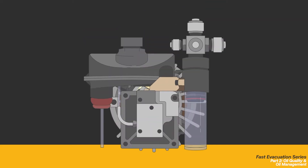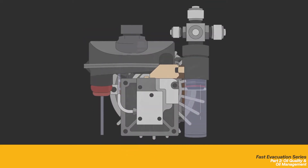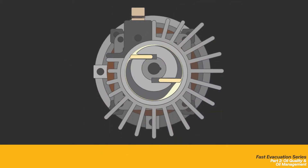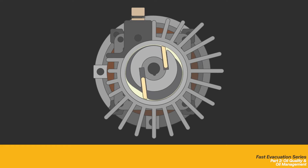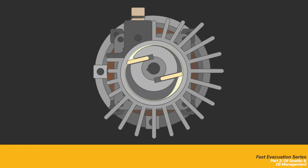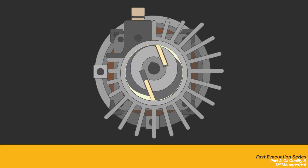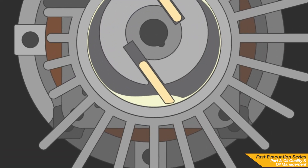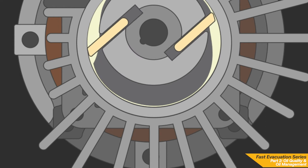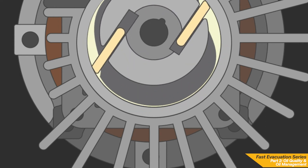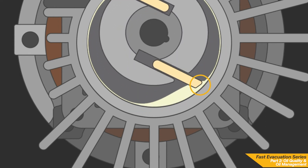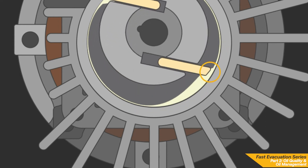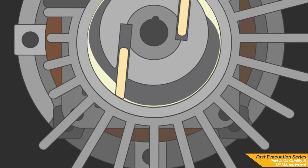While the motor and vanes are spinning, the oil creates a film that helps seal all components. Most critically, it creates a vacuum-tight seal on the leading edge of the vanes. As moisture and contaminants are introduced to the oil, this seal will begin to degrade.